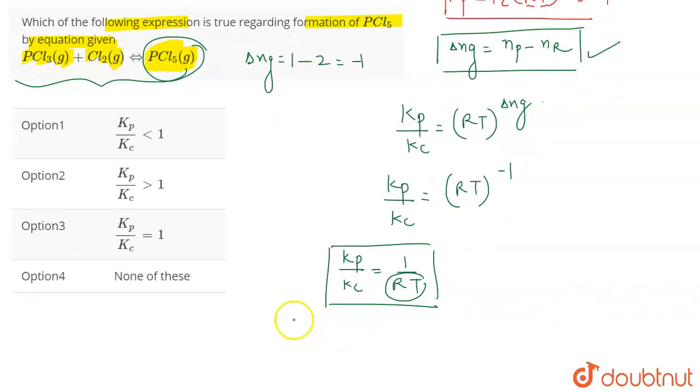This implies that Kp by Kc will have a value less than one, and that's the correct answer for this question. Among all the options, the correct answer is option number one: Kp by Kc will be less than one.